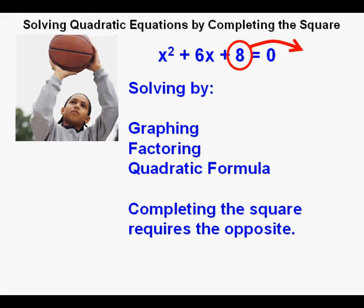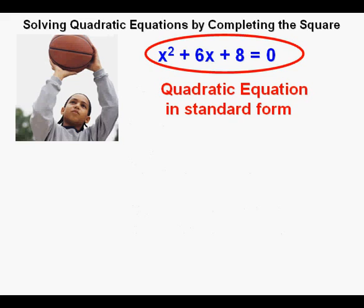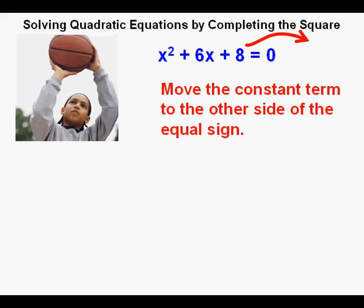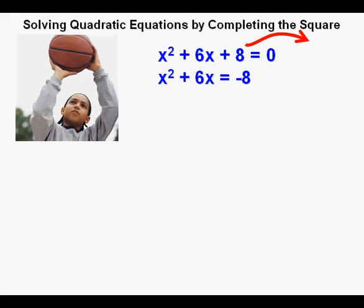So this equation, x squared plus 6x plus 8 equals zero, which we could definitely solve using graphing or the quadratic formula, maybe even by factoring, has to be transformed from standard form by moving the positive 8 over to the right side of the equal sign. So here we have it: x squared plus 6x equals negative 8.